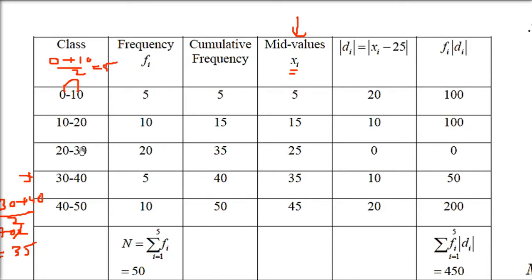Since we have to find mean deviation from the median, we first need the cumulative frequency in order to find the median. Cumulative frequency is the running total of previous frequencies: 5 stays 5, then 5+10=15, then 5+10+20=35, then 35+5=40, and 40+10=50.